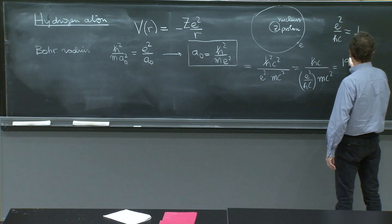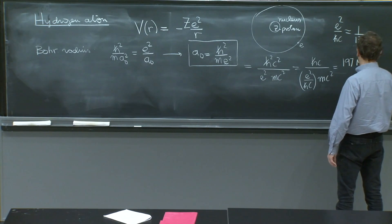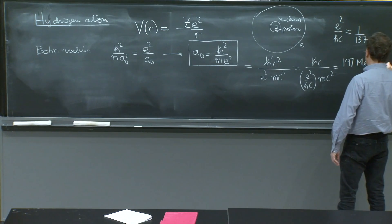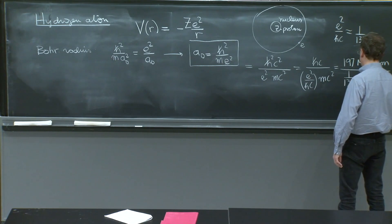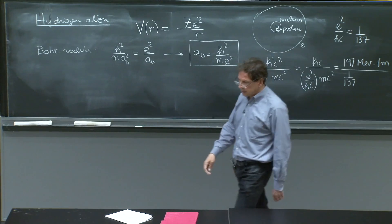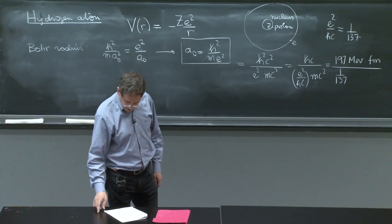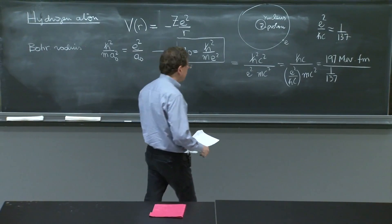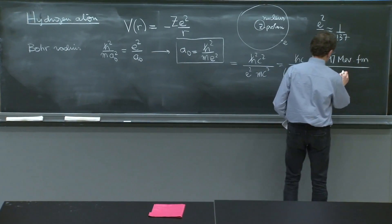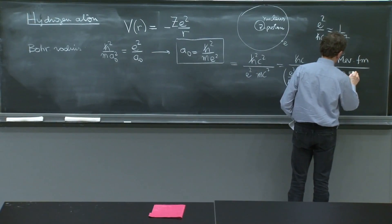This is about 197 MeV Fermi. This is 1 over 137. And for the electron is 0.5 times 10 to the 6 eV, 0.5 MeV.